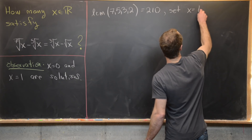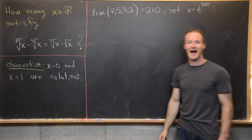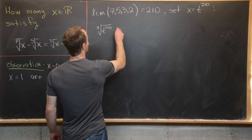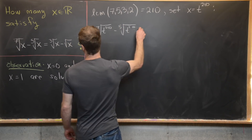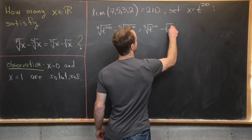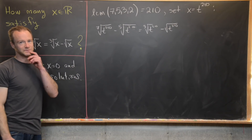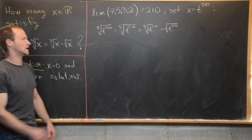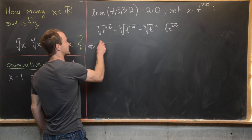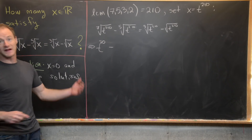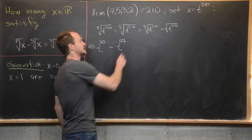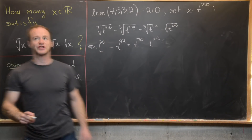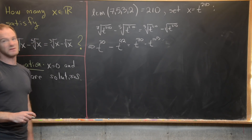So let's set x equal to t to the 210 and see what that does to our equation. We'll have the seventh root of t^210 minus the fifth root of t^210 equals the cube root of t^210 minus the square root of t^210. Using standard rules about exponents and roots, the seventh root of t^210 is t^30, the fifth root gives t^42, the cube root gives t^70, and the square root gives t^105. That transforms our radical equation into a polynomial equation.